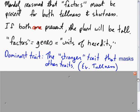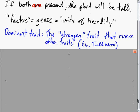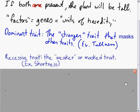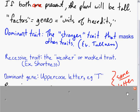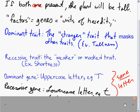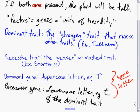The recessive trait is the weaker or masked trait. In pea plants, that would be an example of shortness. We use uppercase letters to designate dominant genes and lowercase letters to represent the recessive trait or recessive gene.